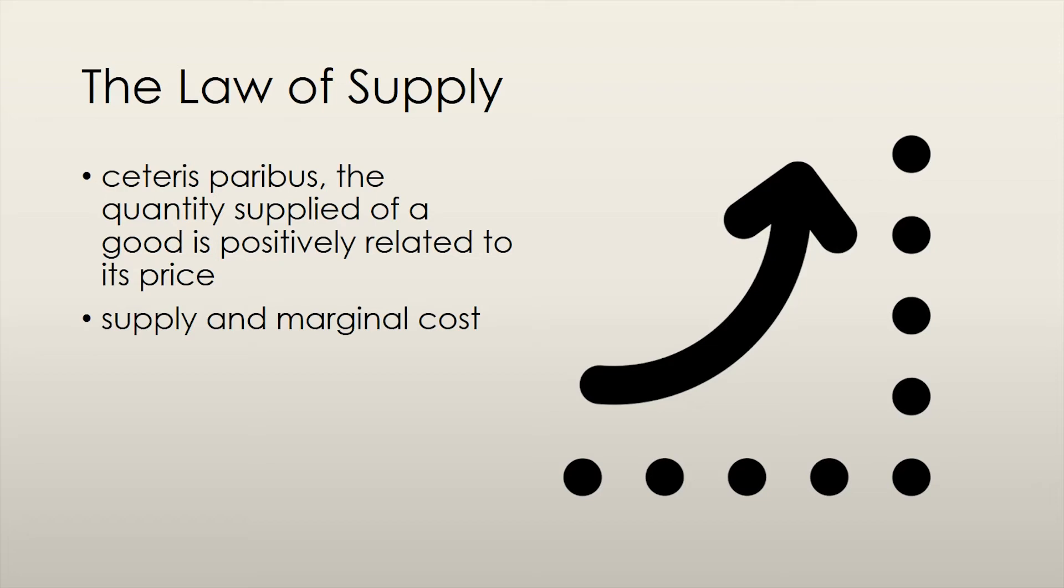Thus, the cost of producing an additional unit of the good goes up. Companies want to, at least, cover the cost of production. Therefore, the market price must equal the cost of production for the company to even think about producing the good. And this is why the quantity supplied of a good or service increases as the price of that good increases.